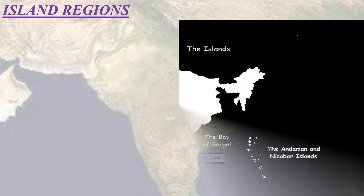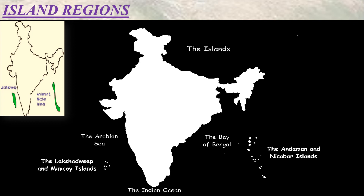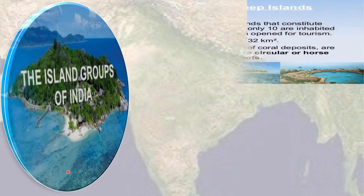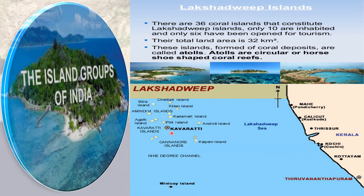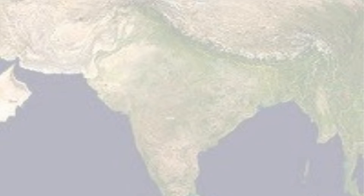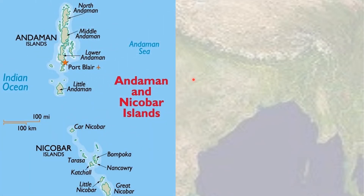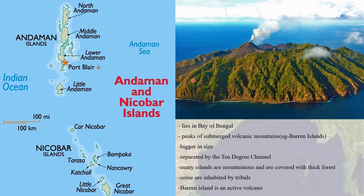Two distinct groups of islands lie in the two oceans surrounding the mainland of India: the Andaman and Nicobar Islands in the Bay of Bengal and the Lakshadweep Islands in the Arabian Sea. The Lakshadweep Islands are located close to the Malabar coast on the western coastline and consist of clusters of coral islands, remaining largely uninhabited. The Andaman and Nicobar Islands are a group of 550 islands located off the Bay of Bengal in the Indian Ocean. They are larger in size than the Lakshadweep Islands and are separated by the 10-degree channel. An active volcano exists on Barren Island in the Andamans.